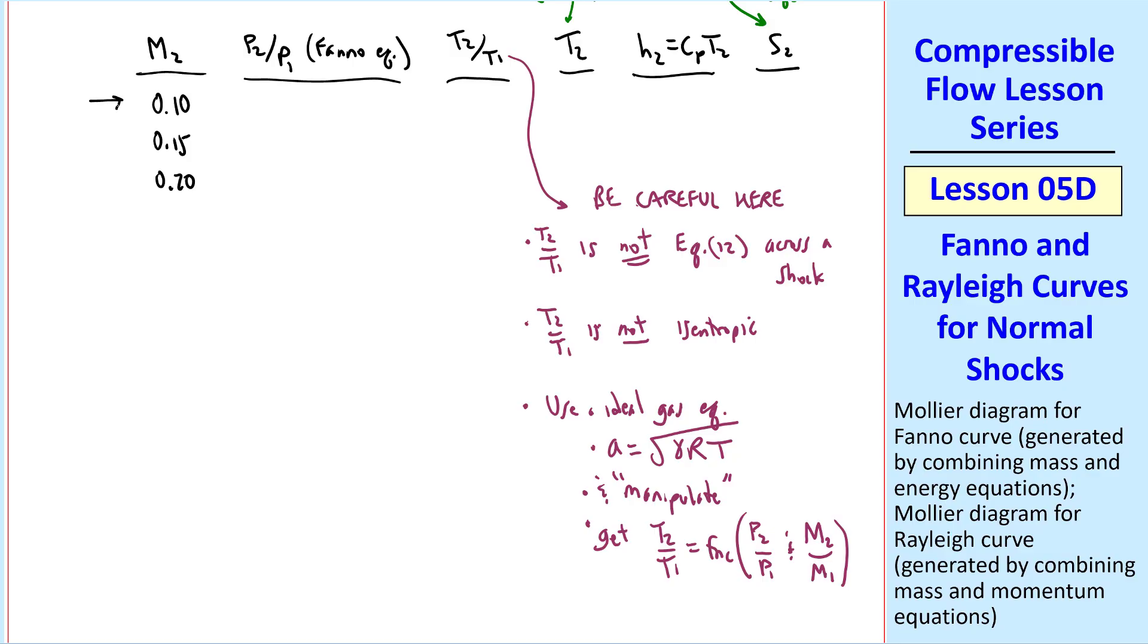I started at some low value, 0.1. You can go up to sonic conditions, and then continue to 3.0 or 4.0, etc. And then you can see that for each known M1 and M2, we can calculate the pressure ratio from the Fanno equation, temperature ratio from here, since we now know both M2 over M1 and P2 over P1, and then T2, H2, and S2.